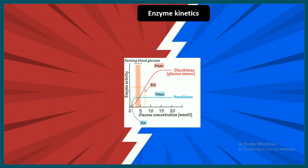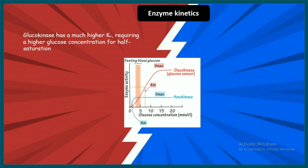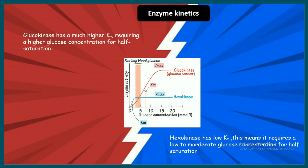Now let's talk about enzyme kinetics. From the graph we can already see they have different Vmax and Km profiles. Glucokinase has a much higher Km, which simply means it has very low affinity toward glucose. In contrast, hexokinase has a very low Km, meaning it has very high affinity towards glucose and requires only a low to moderate concentration of glucose to achieve half saturation.